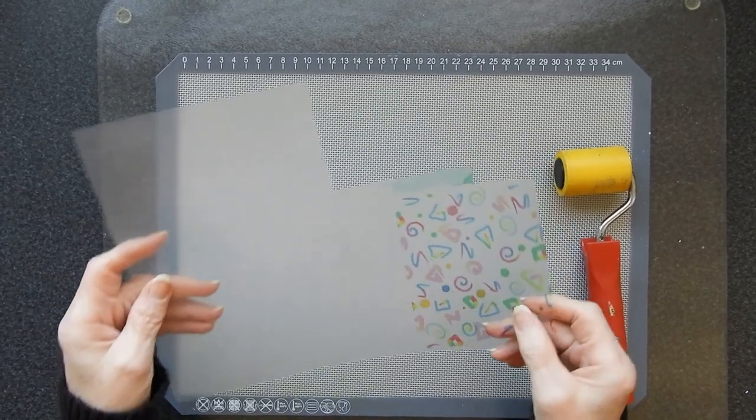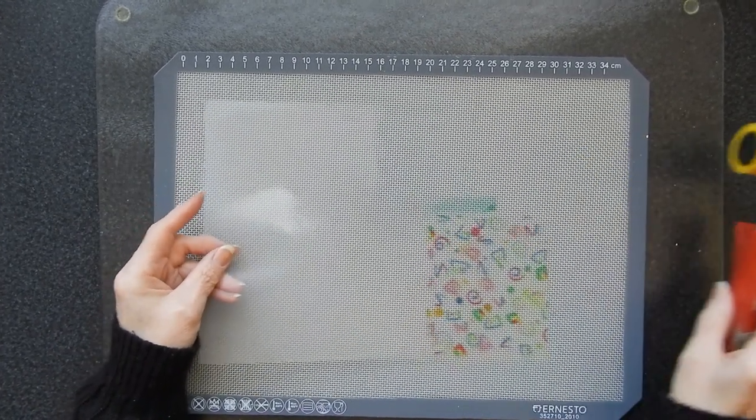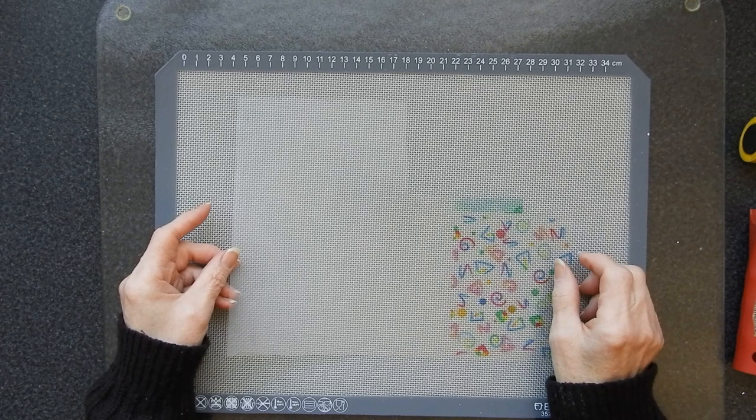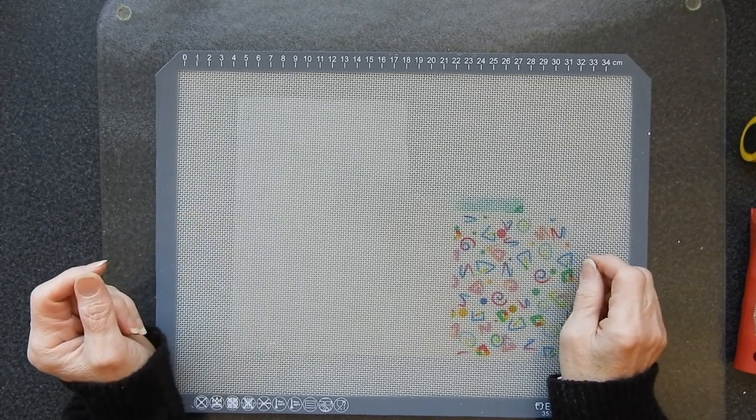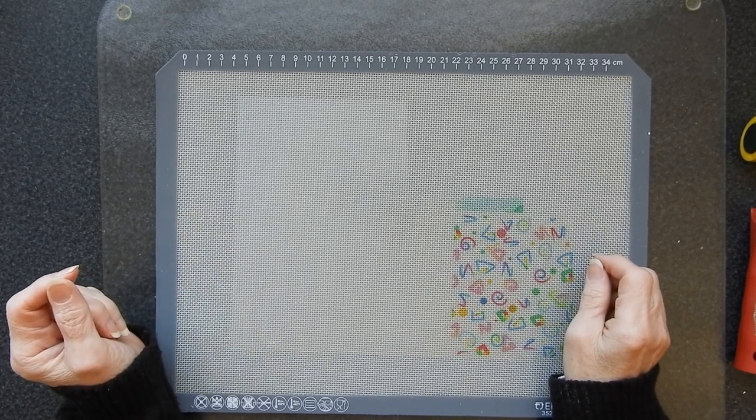So that is how you print on acetate if you have an inkjet that doesn't like acetate printing. Thanks for watching. I'll see you again soon. Take care now.